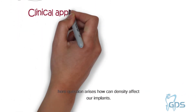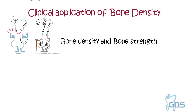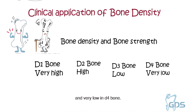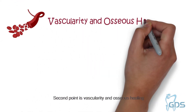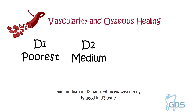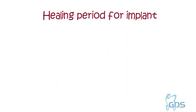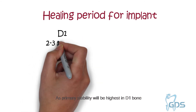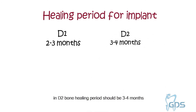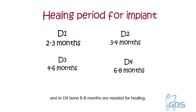Can bone density affect our implants? Bone strength and density are very high in D1, high in D2, low in D3, and very low in D4 bone. Regarding vascularity and osseous healing, blood vessels are least in D1, medium in D2, good in D3, and highest in D4 bone. For healing period: D1 bone requires 2–3 months, D2 requires 3–4 months, D3 requires 4–6 months, and D4 requires 6–8 months.